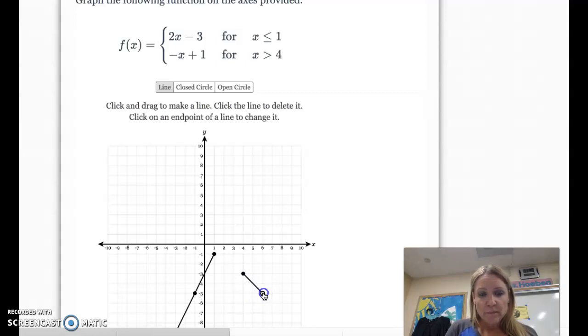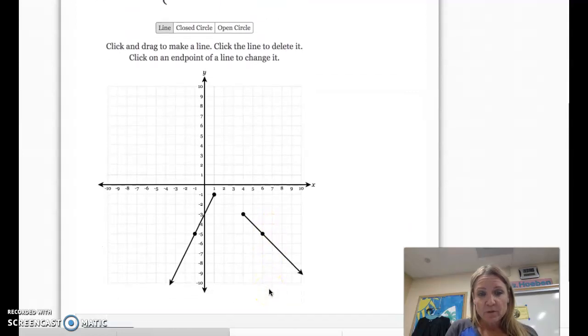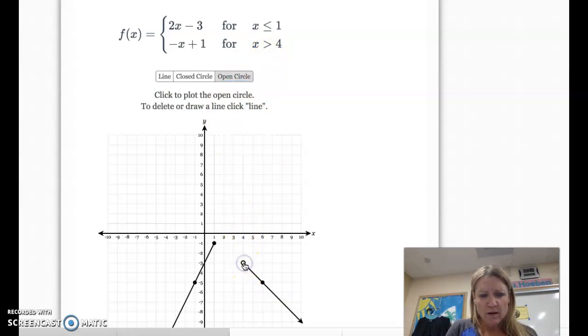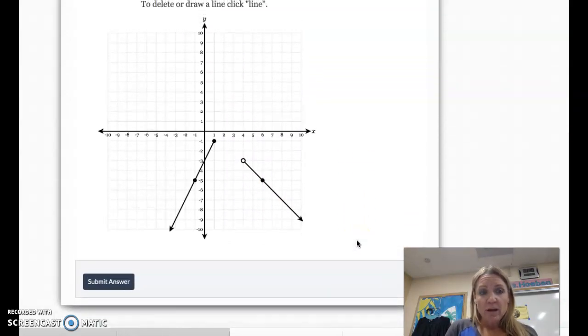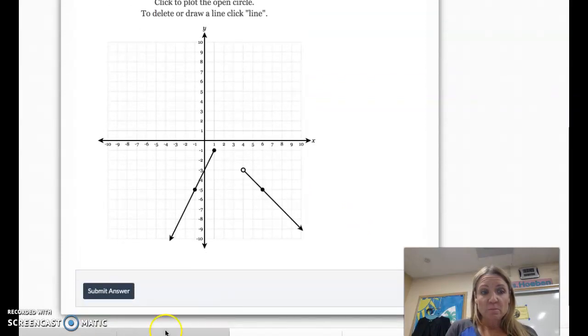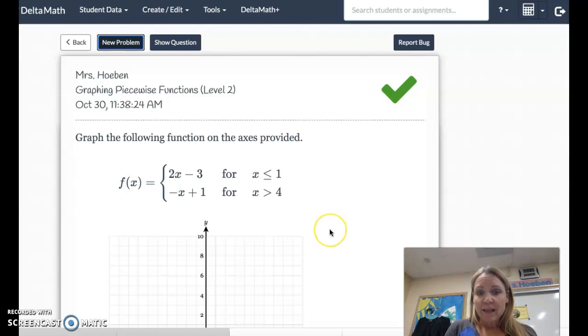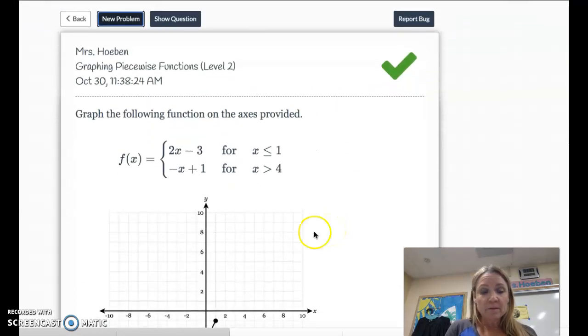Click it until it becomes a ray. Looks like that. And there's no equal part here, so we need an open circle in this point right here. And then we're going to come down here, and we're going to submit it. See if it likes it, and it likes it. Alright? Awesome.